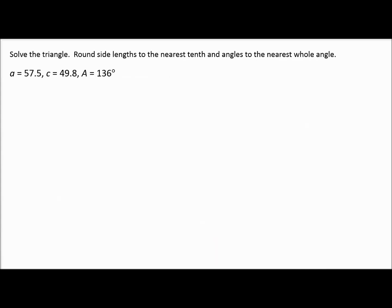When you look at a triangle problem, the first thing to check is: do I know two of the angles? I don't — I know side A, side C, and only angle A. So this is not one of the easy two-angle problems. The next thing to check is: do I know a side and the angle directly across from it — matching letters in our naming convention? If I have matching letters, I can use the law of sines.